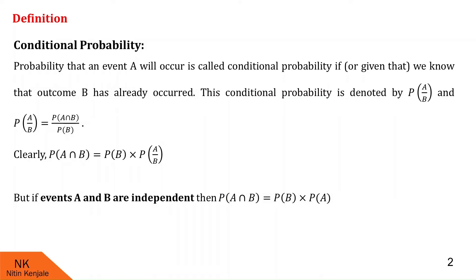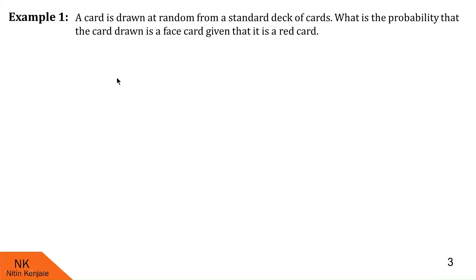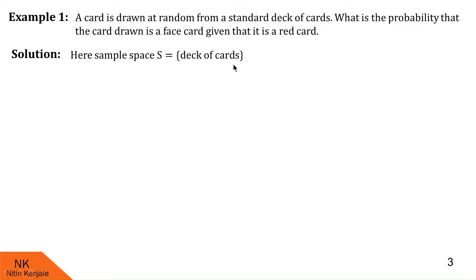Now let us see examples based on this concept. A card is drawn at random from a standard deck of cards. We are asked: what is the probability that the card drawn is a face card given that it is a red card? Since a single card is drawn from a standard deck of 52 cards, this can be done in 52C1 ways. So the sample space S consists of all 52 cards, and N of S equals 52.